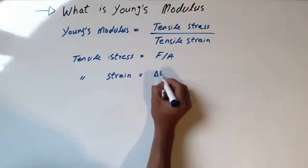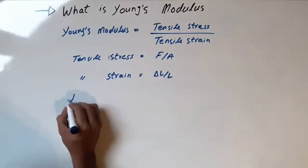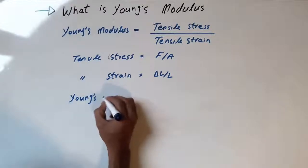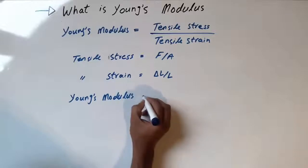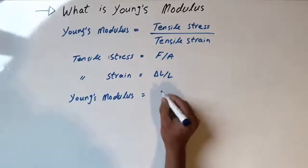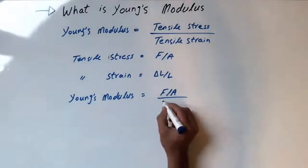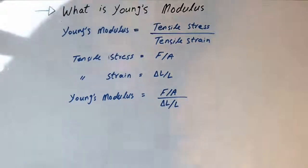Tensile strain is change in length over original length. Now the Young's Modulus would be, from the formula, force over area divided by change in length over original length.